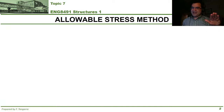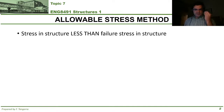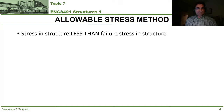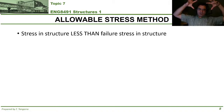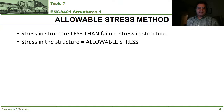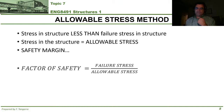Let's talk about the allowable stress method first. This method is on its way out and is not used in Canada anymore. In general terms, it's based on the concept that, given the applied load, you want to limit the stress in the structure to a value less than the structure's failure stress. The stress in the structure is called the allowable stress, and the ratio of the failure stress to the allowable stress is the safety margin — also called the factor of safety.